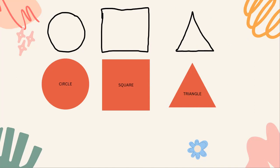Before we find our shapes today, let's take a peek at how we are going to identify these shapes. These shapes each have sides to them. Our square has one side, two sides, three sides. Our triangle over here has one side, two sides, three sides.